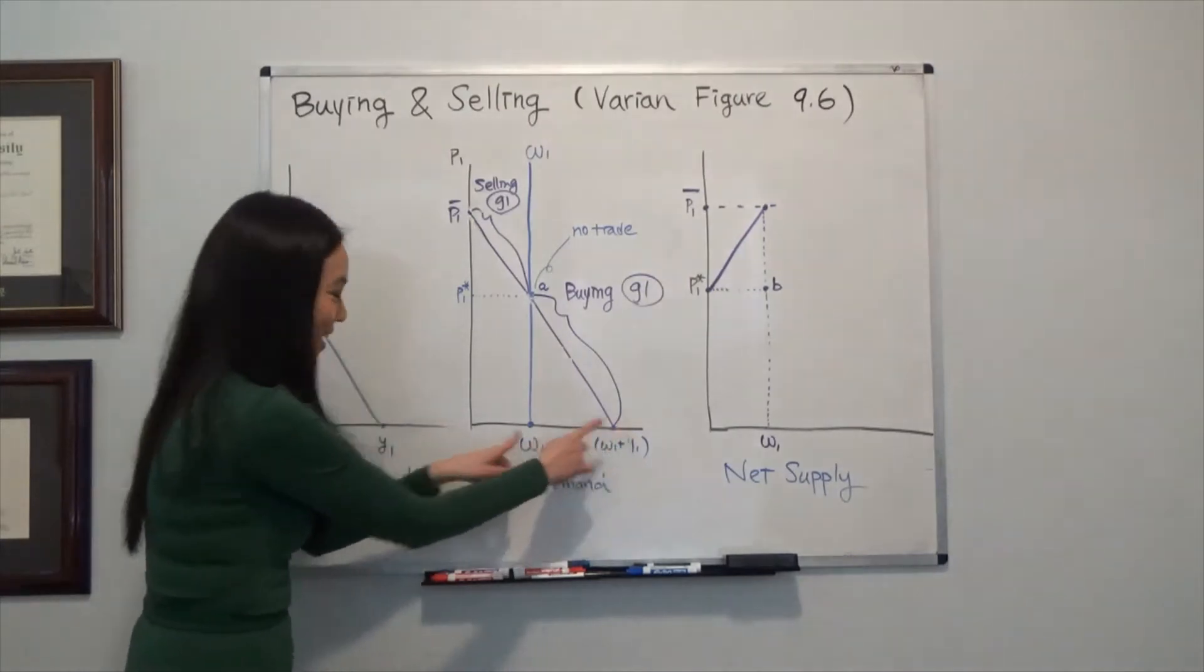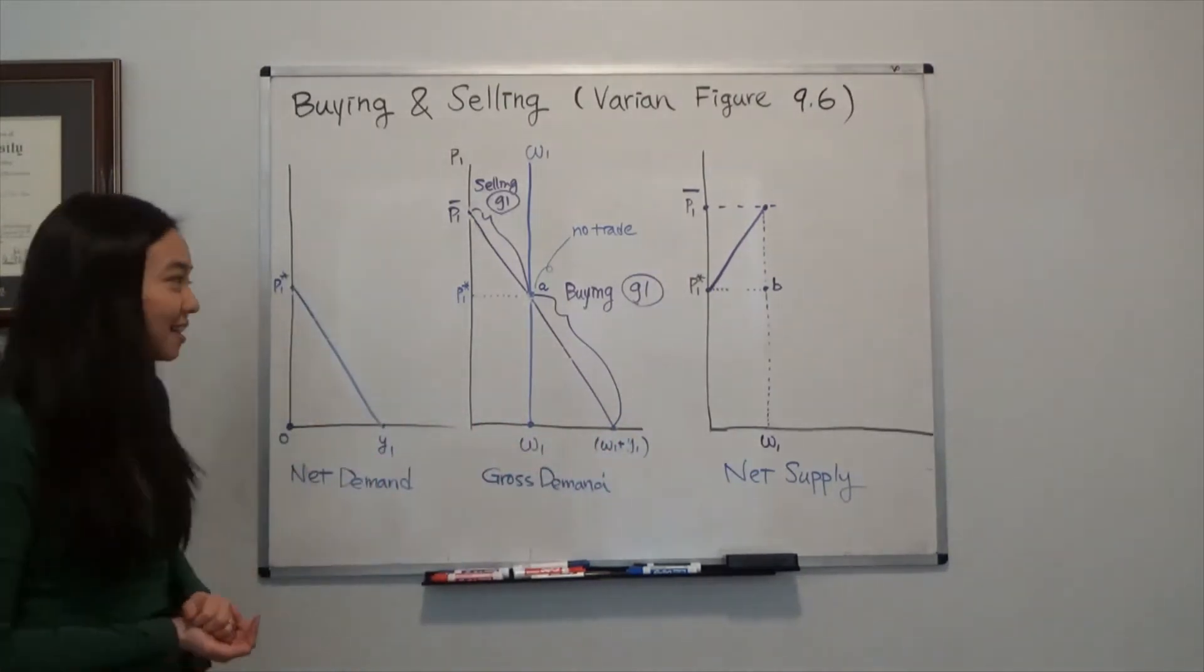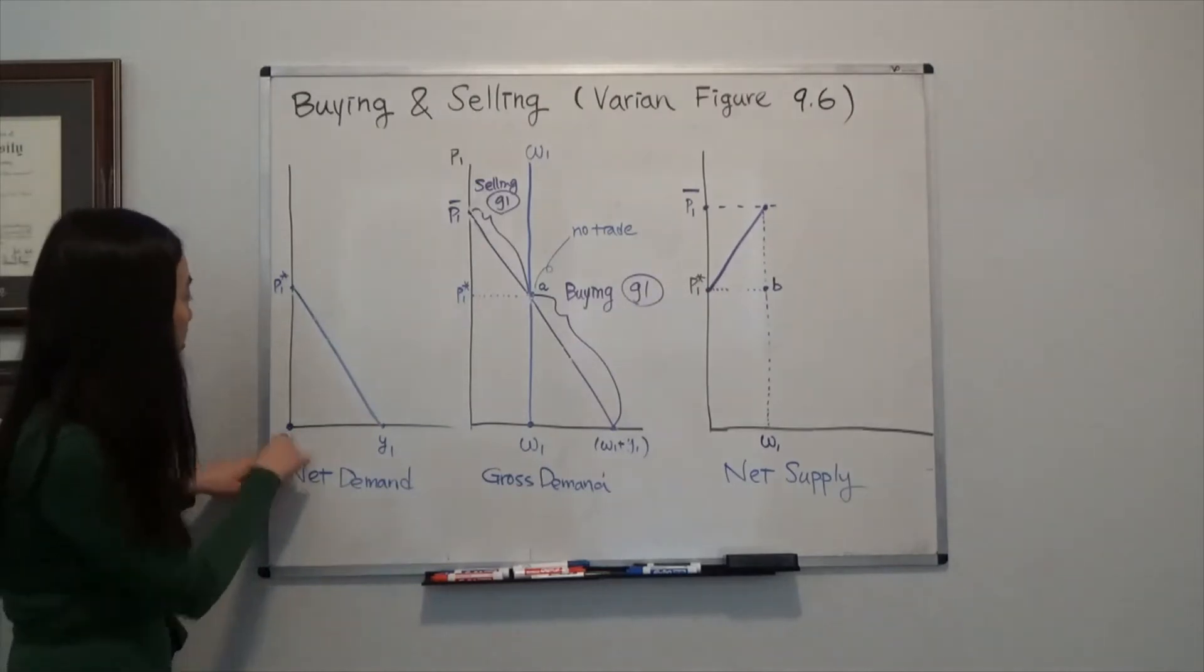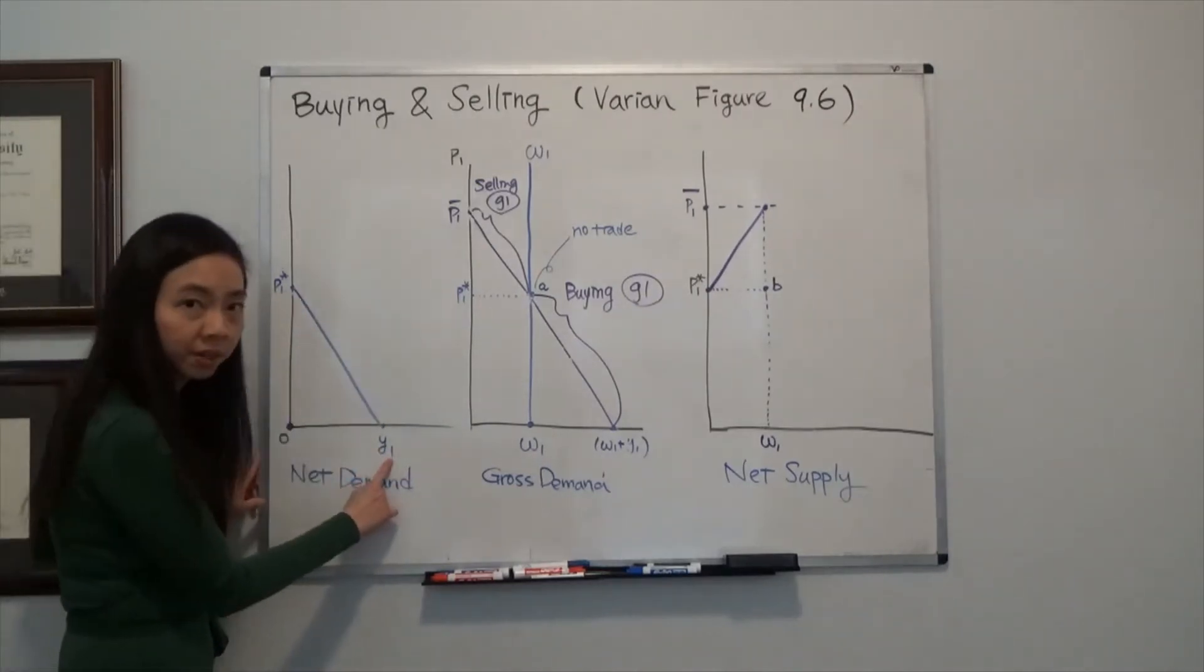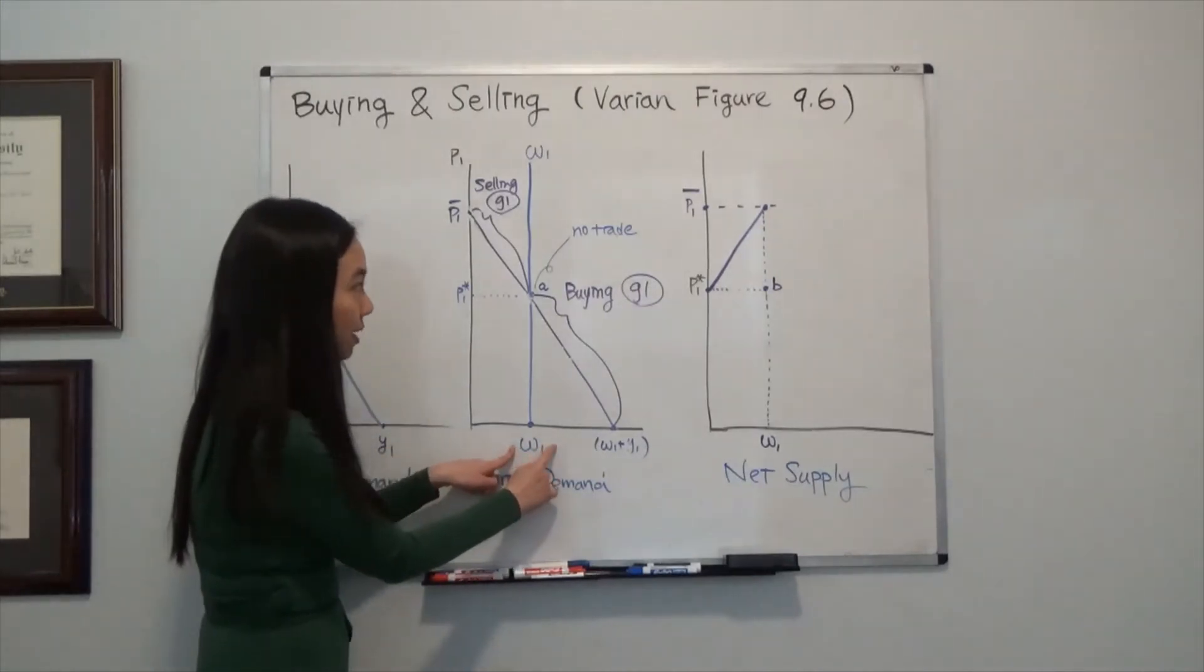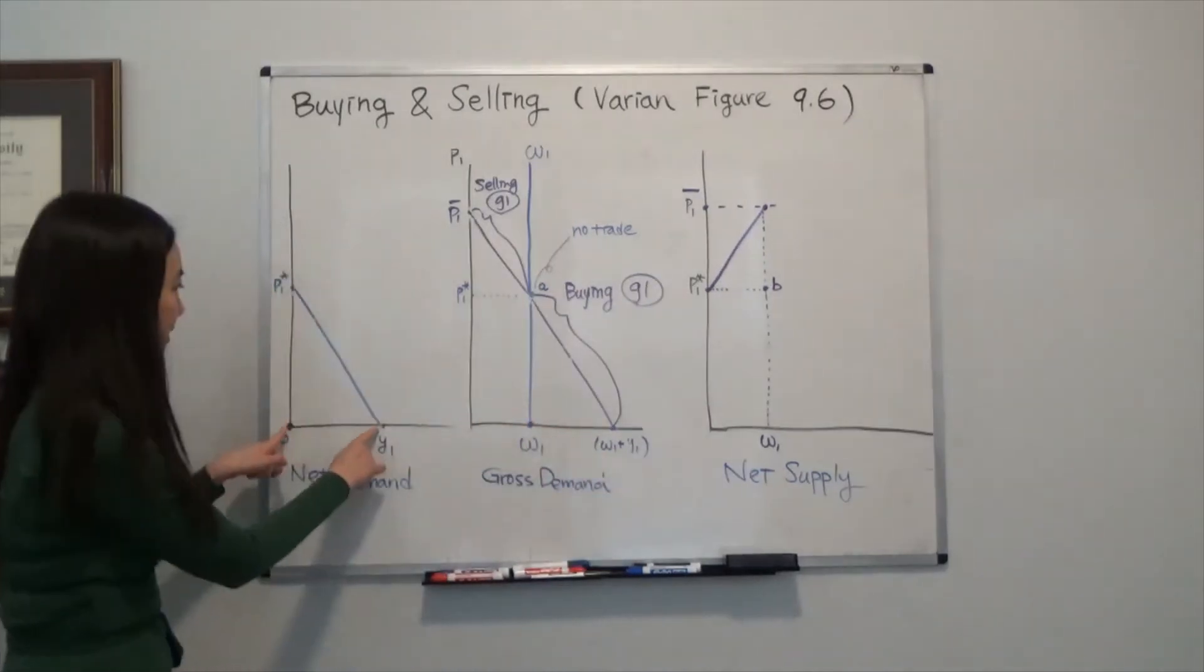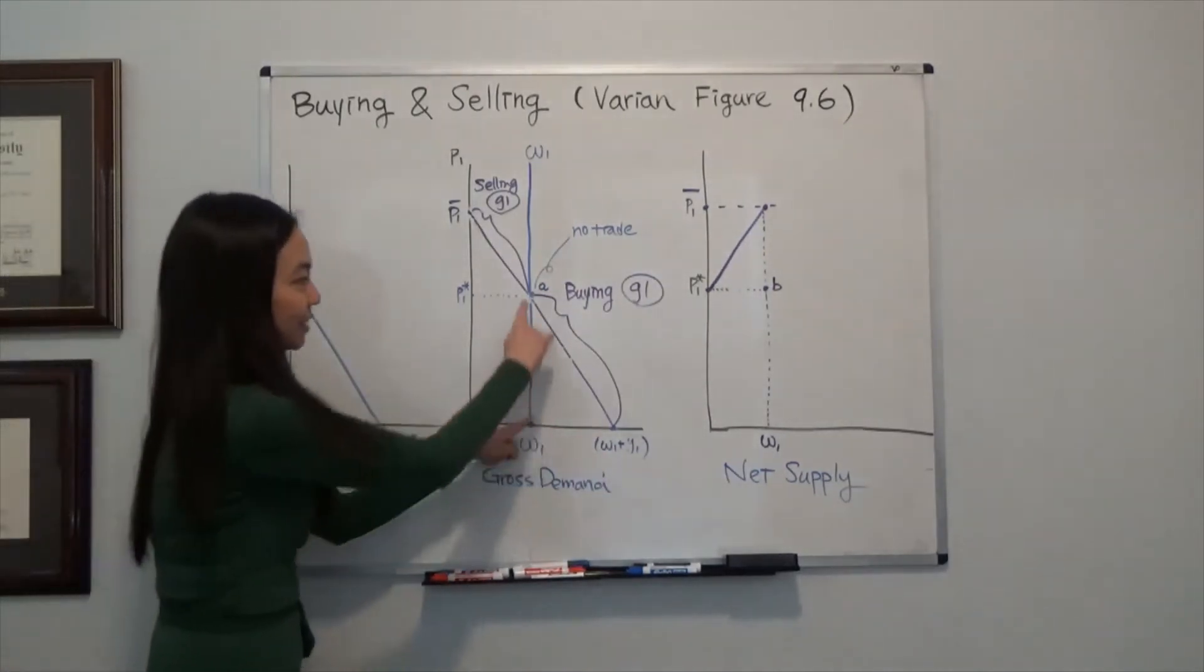Okay, so this is my gross demand and this is my net demand. And therefore, you can see that triangle 0, P1 star and 1, 1 is identical to this triangle, omega 1, A, omega 1 plus Y1. So you can see these two triangles are identical.